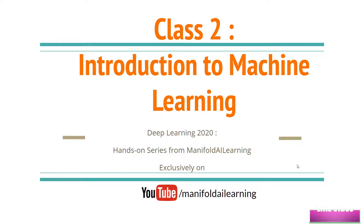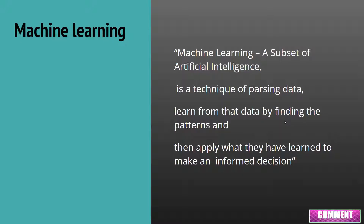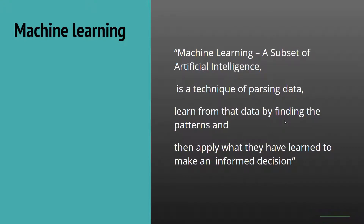We learned that Machine Learning is a subset of Artificial Intelligence. We use this technique to understand the data and find the patterns in it so that we can take an informed decision. This is the simple definition of Machine Learning.